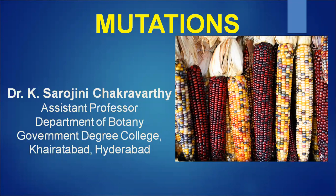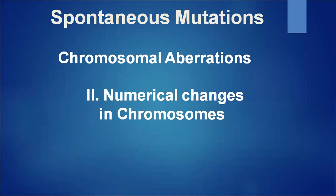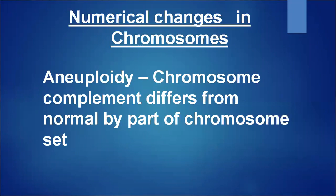In this class we are going to see the second category of chromosomal aberrations — changes in the number of chromosomes. This occurs in two ways: changes in sets of chromosomes, that is euploidy, and changes in the number of a few chromosomes, that is aneuploidy.